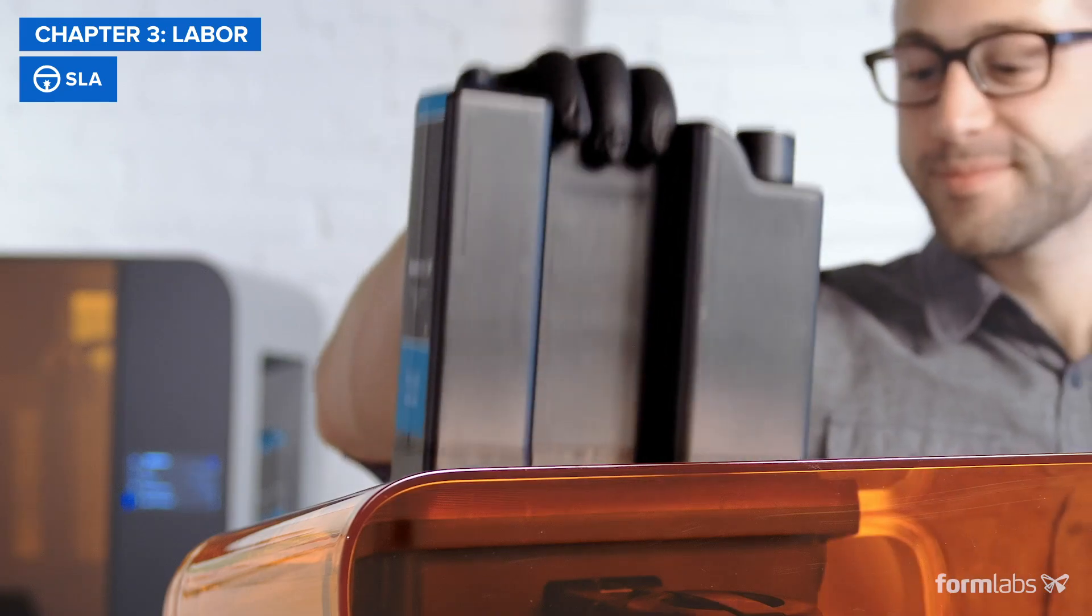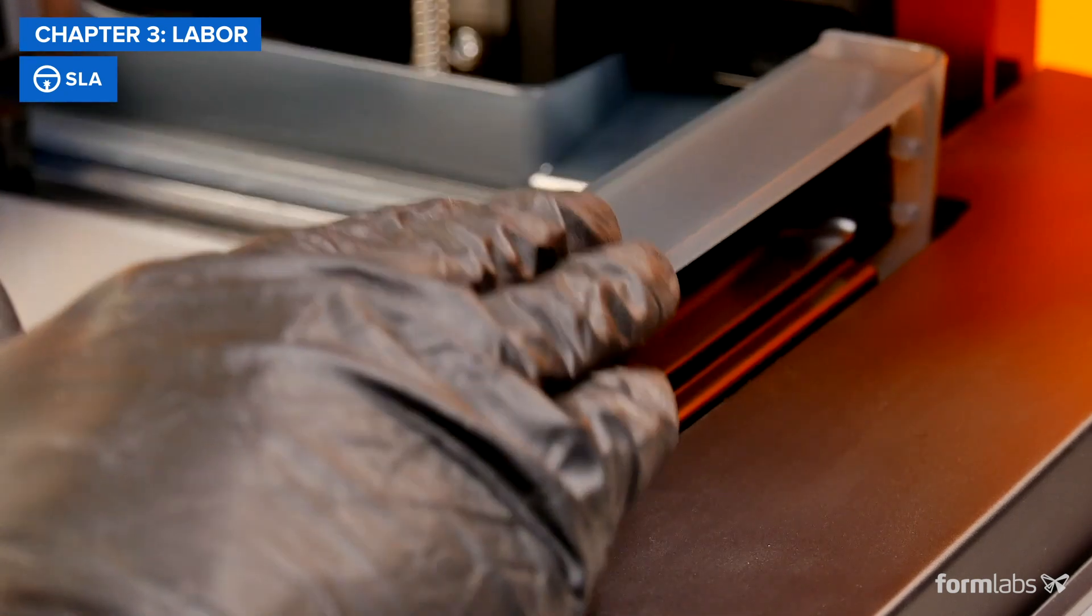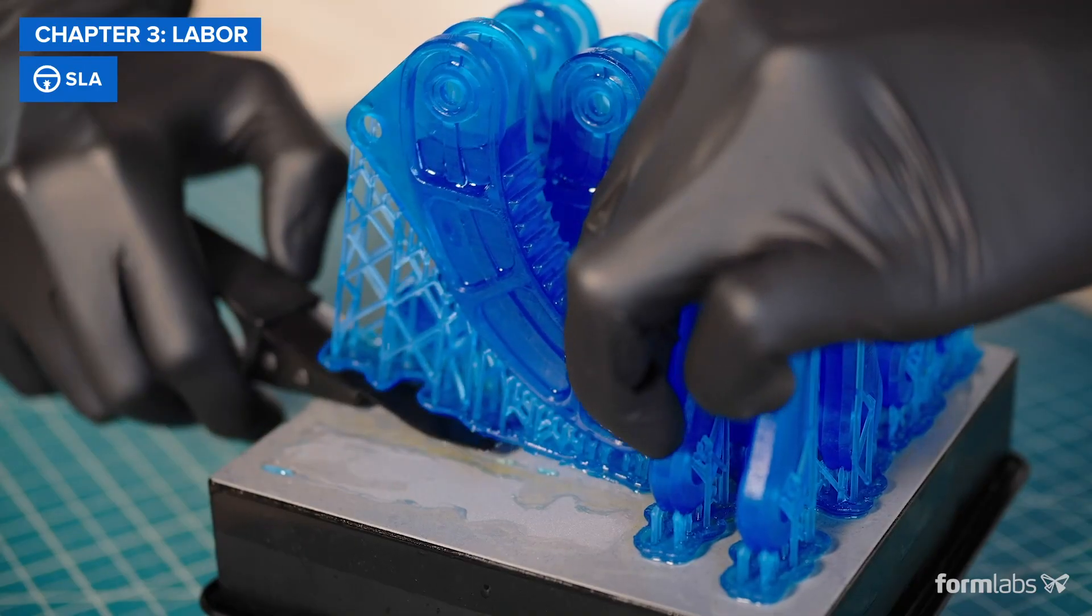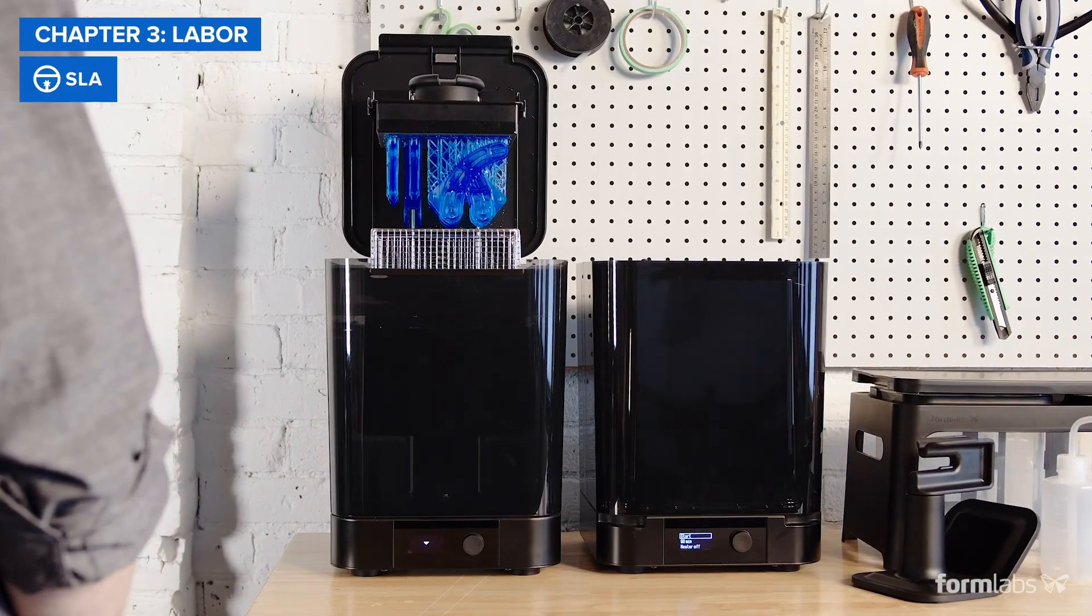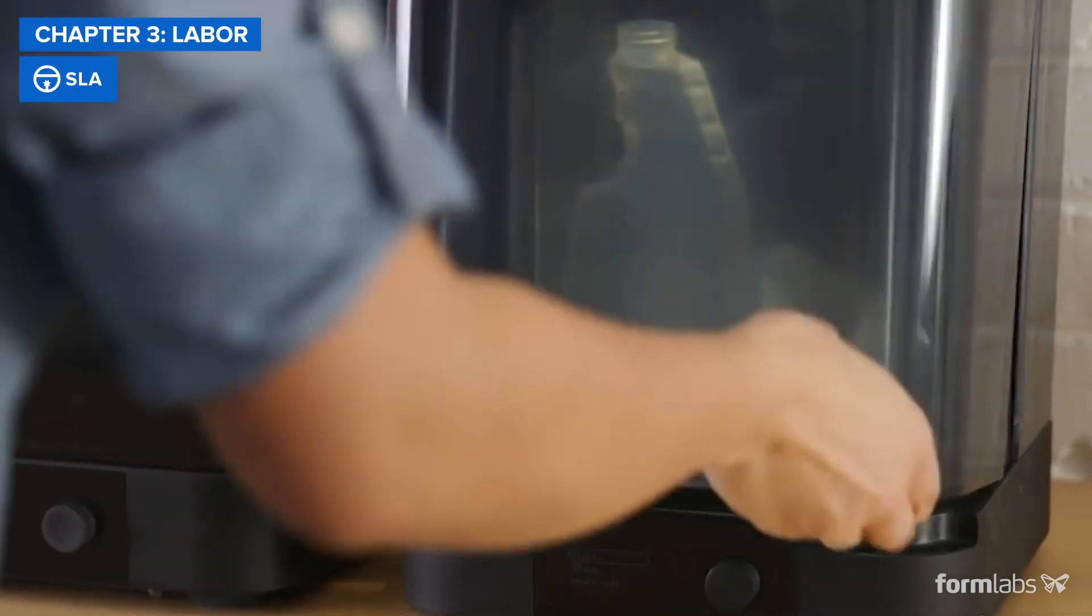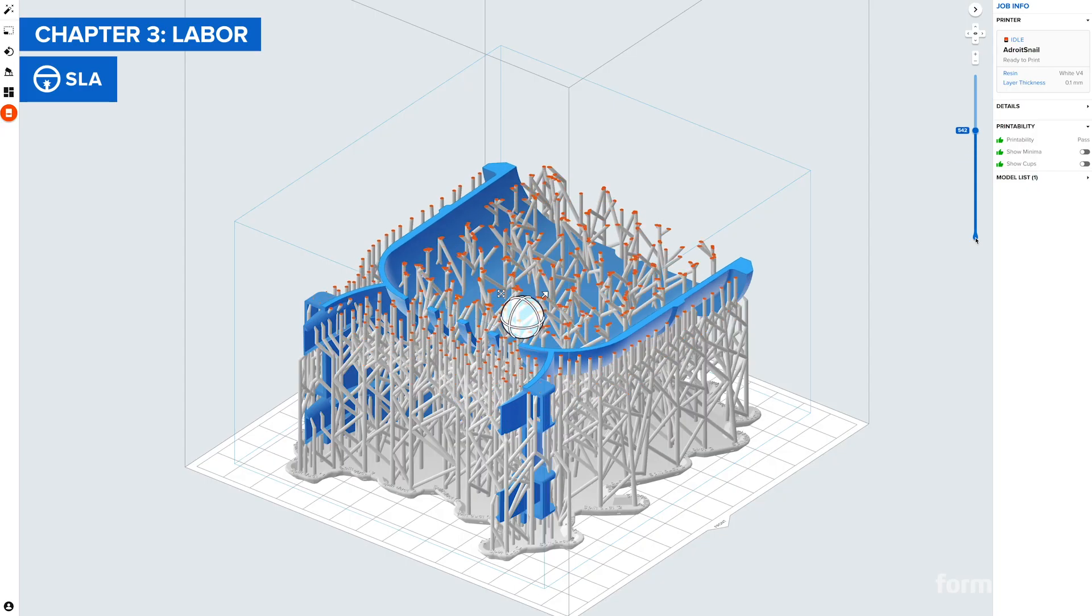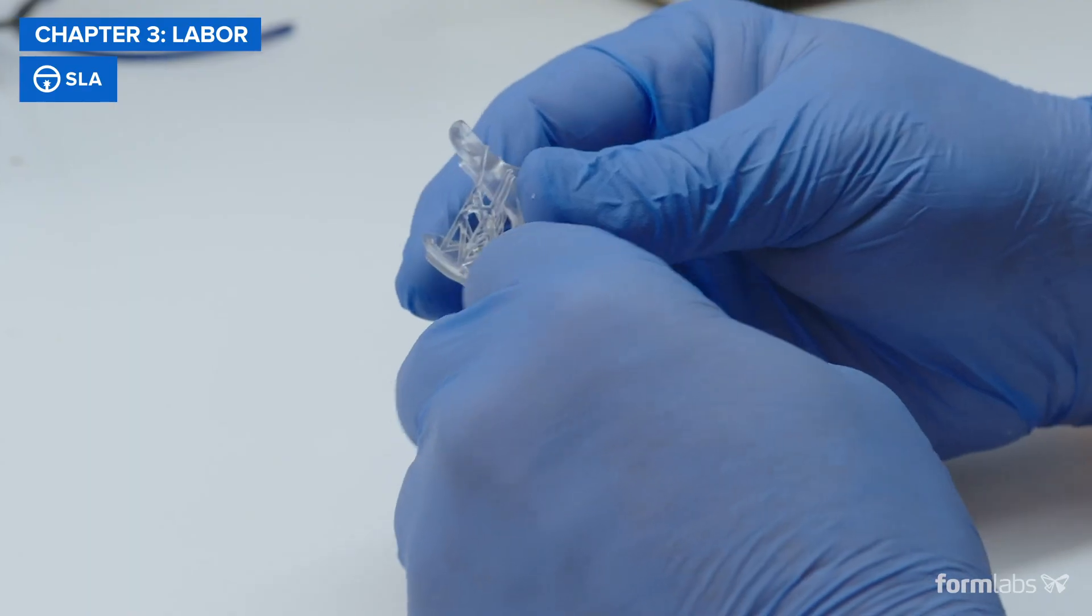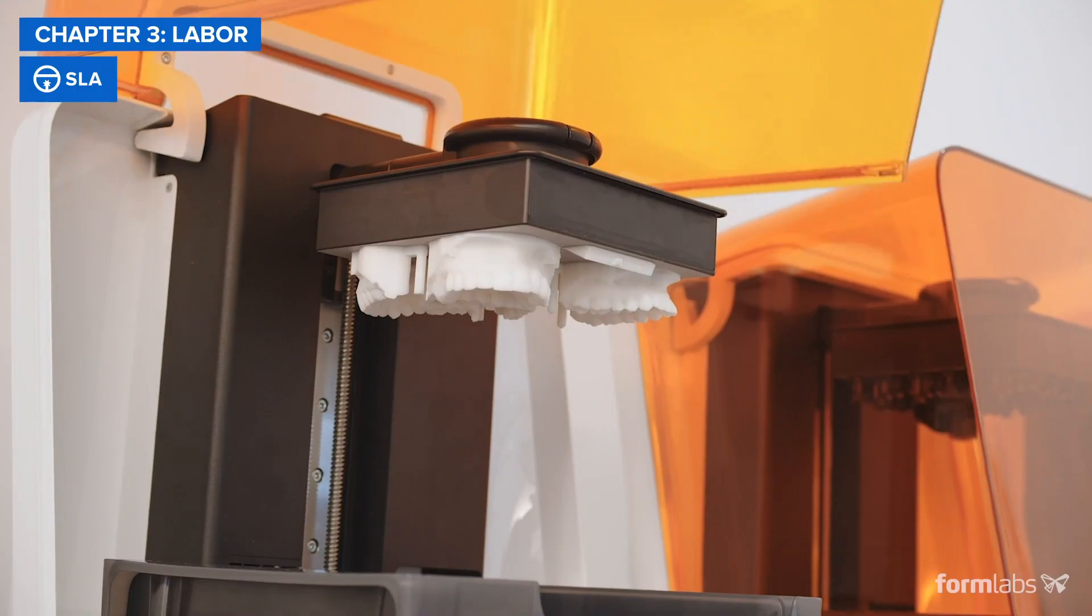When it comes to setup and maintenance, SLA printers are even easier and faster than FDM. Post-processing for SLA includes washing parts in a solvent and, depending on the material, also post-curing the parts. However, these steps can be automated to minimize time and labor. Thanks to light touch supports, support removal is quick and parts have a high surface quality right out of the printer.